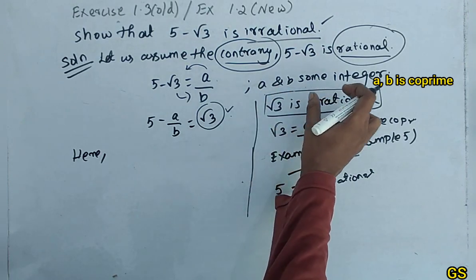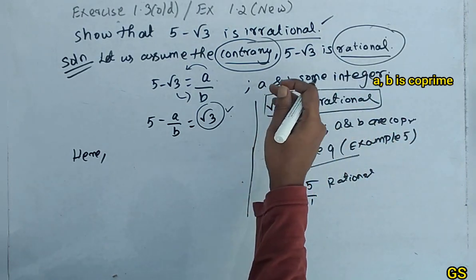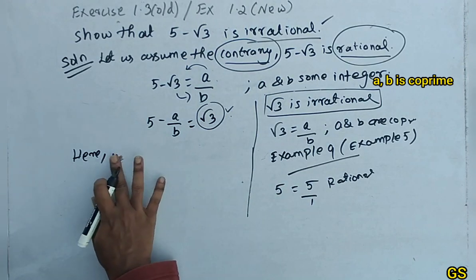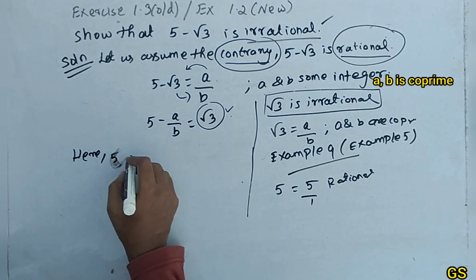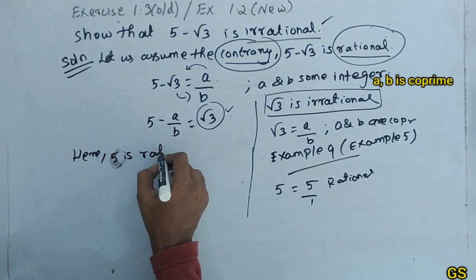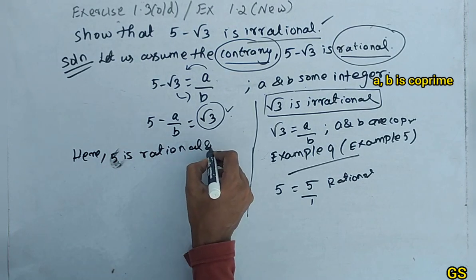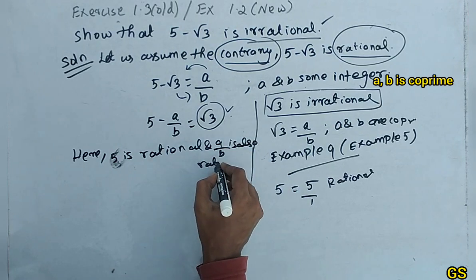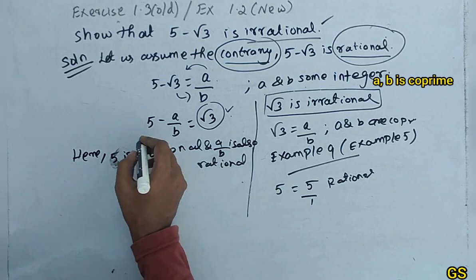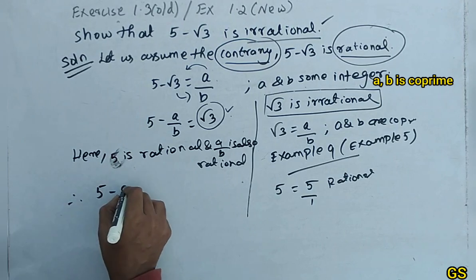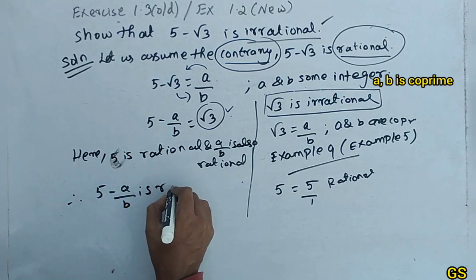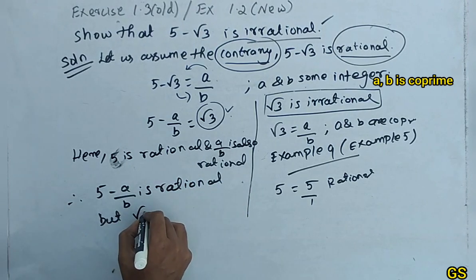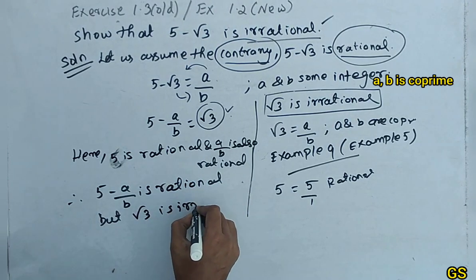Since a and b are integers, a/b is also rational. So we have 5 is rational and a/b is rational. Therefore, 5 minus a/b is rational. But √3 is irrational — we know that. So this is a contradiction.